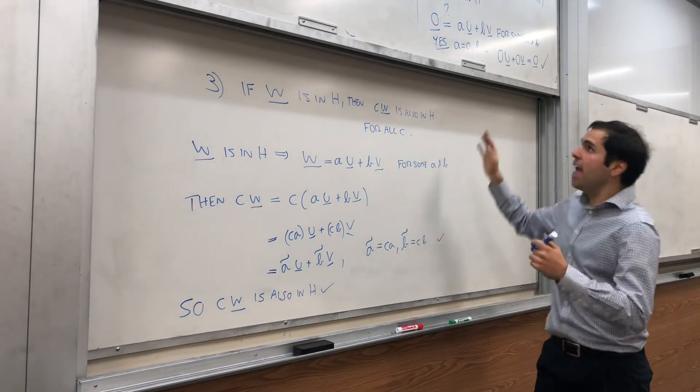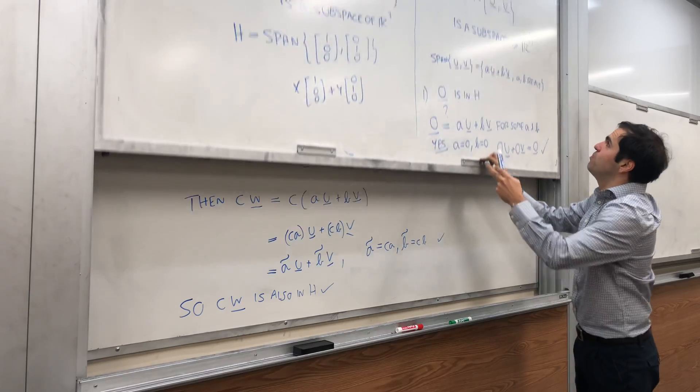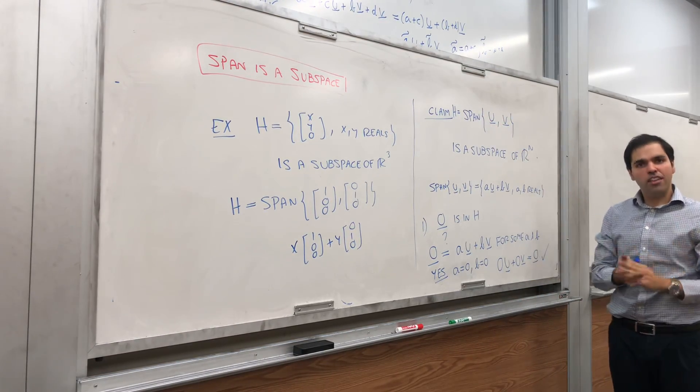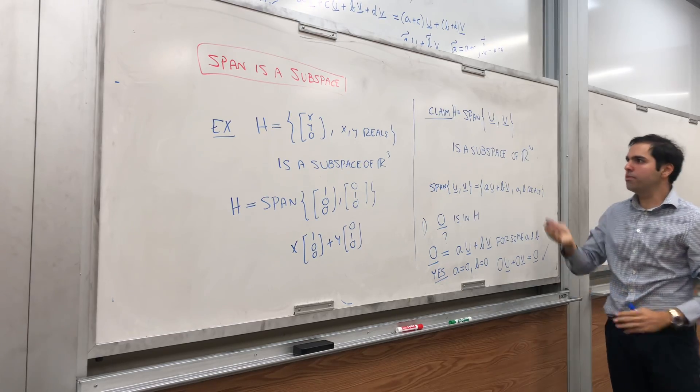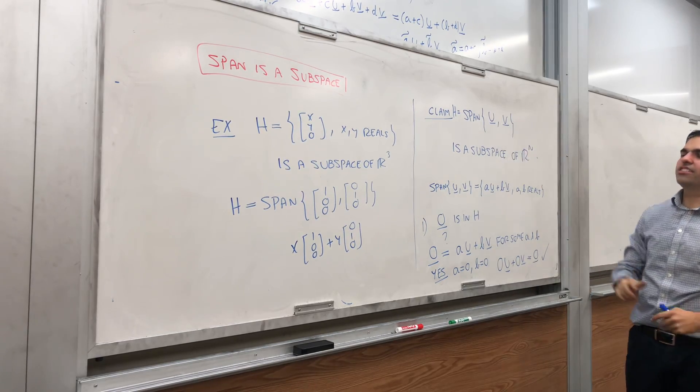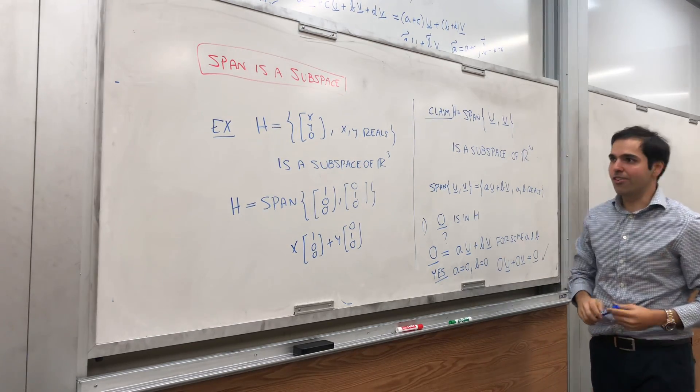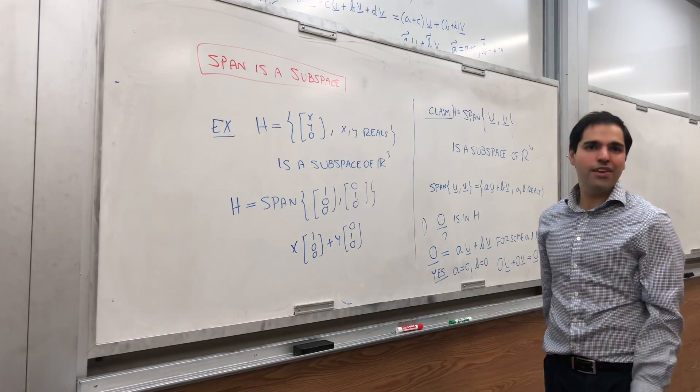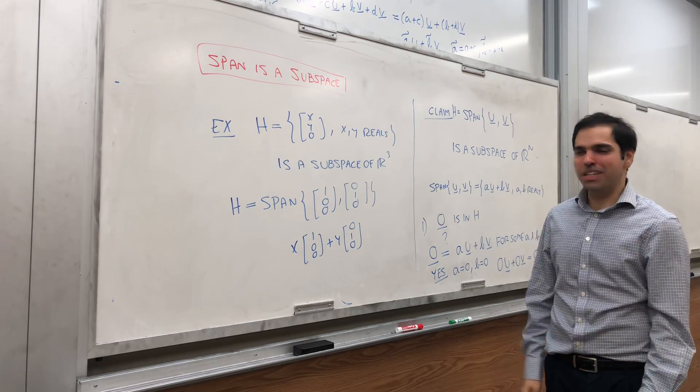That's why H, which is the span of U and V, satisfies the three requirements of being a subspace. So indeed, it is a subspace. In this case, a subspace of Rn. But this works, again, for any abstract vector spaces. And it provides us with a very nice way of checking that the span is a subspace.